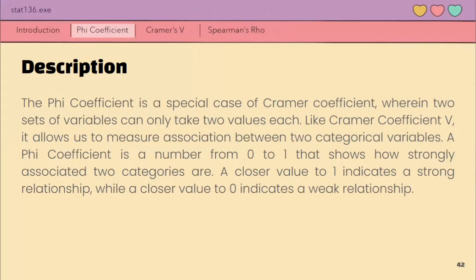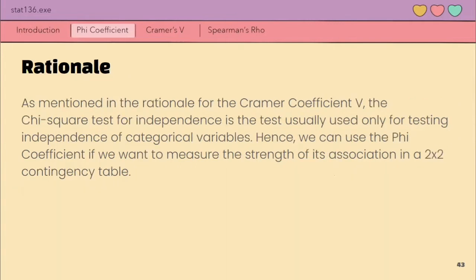Since it's just a 2 by 2 case of Cramer, same lang din naman siya with Cramer except for a few parts lang. Pero like Cramer, 0 to 1 lang din ang value ng phi coefficient. As mentioned, same lang din siya na since hindi nga mamemeasure ng chi-square ang strength of association between variables, we need a test for it. Hence, we can use Cramer coefficient V. But for a 2 by 2 case, we shall use the phi coefficient for measuring.